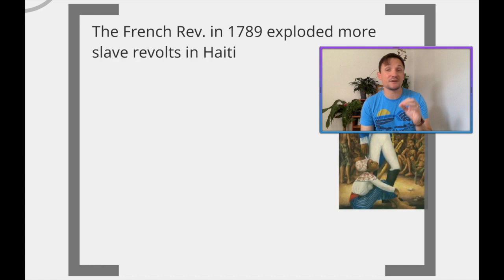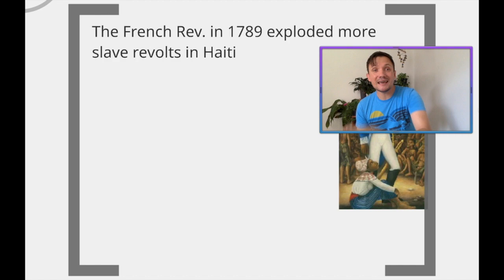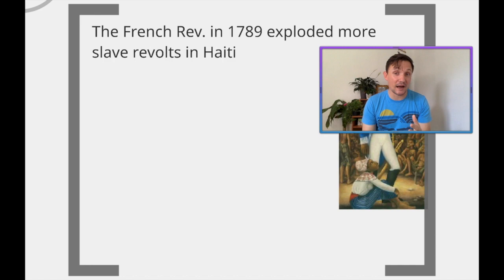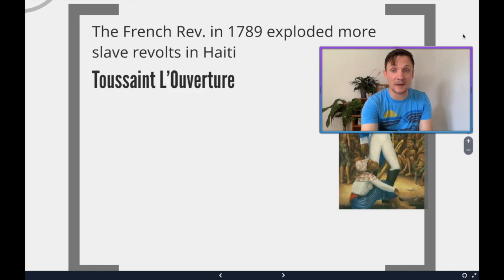Latin American independence movements are mainly called as such because you have a lot of disenfranchised people — like slaves coming out of Saint-Domingue, going to be eventually Haiti — and also the Creoles. Not Creoles like Creole seasoning, but Creoles as in the groups of native-born Latin Americans in Latin America. In 1789, the French Revolution blows up, and this is going to inspire independence movements in Haiti, or Saint-Domingue, on the island of Hispaniola.